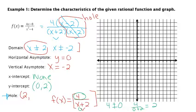And then finally for the hole, let's graph the asymptotes first and then we'll talk about that hole. We're going to have a horizontal asymptote at 0, a vertical asymptote at negative 2. Then I know I'm going to have a y-intercept at 0, 2.